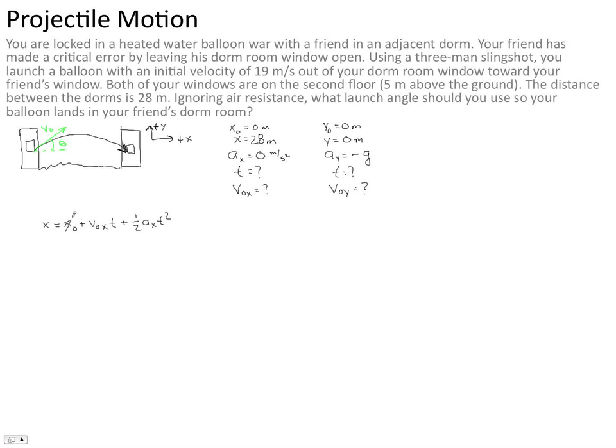equation, some of these things are 0, right? x0 is 0. This whole thing is 0 because the acceleration in the x direction is 0. So we can rewrite all this as x equals v0x times t.